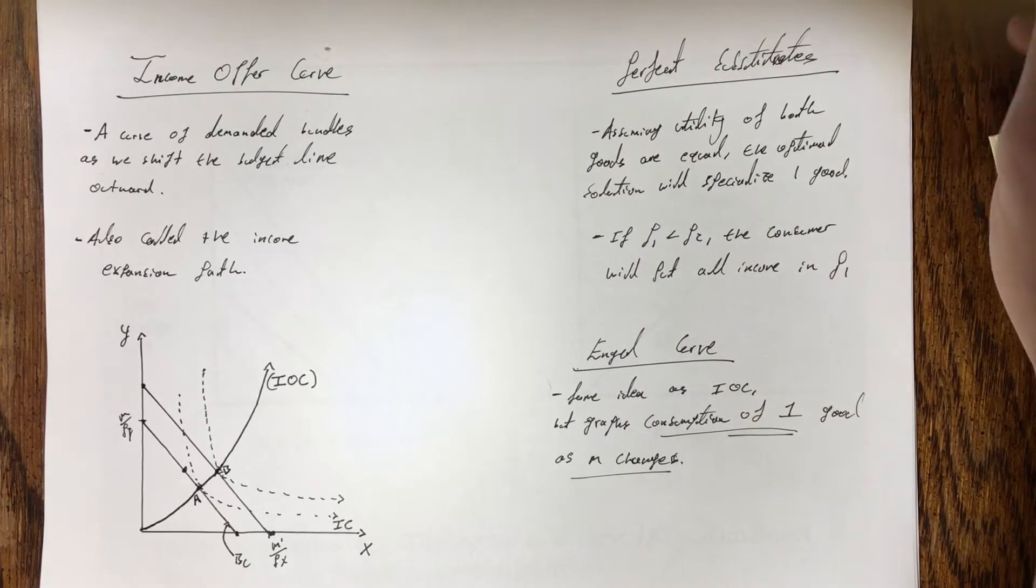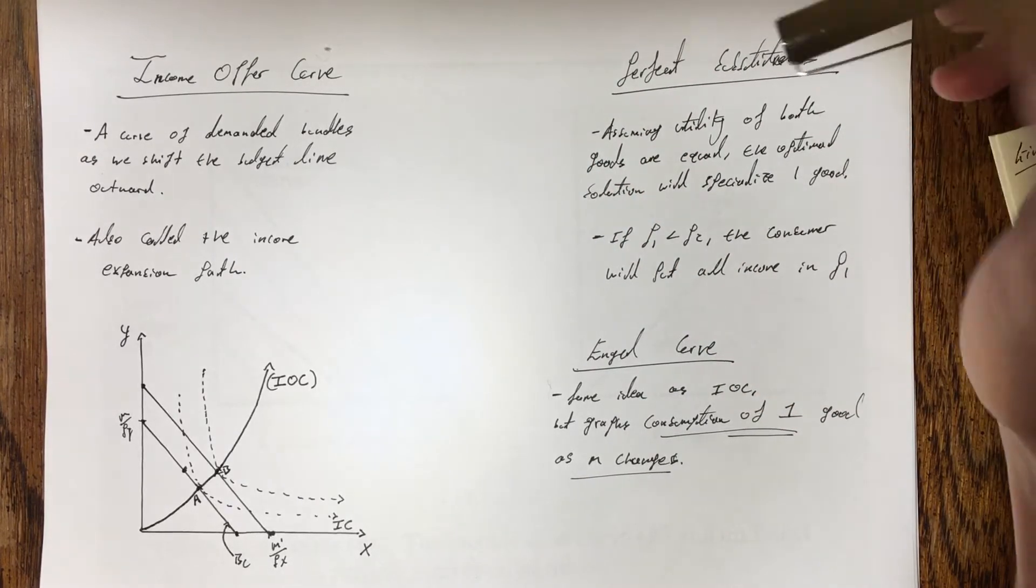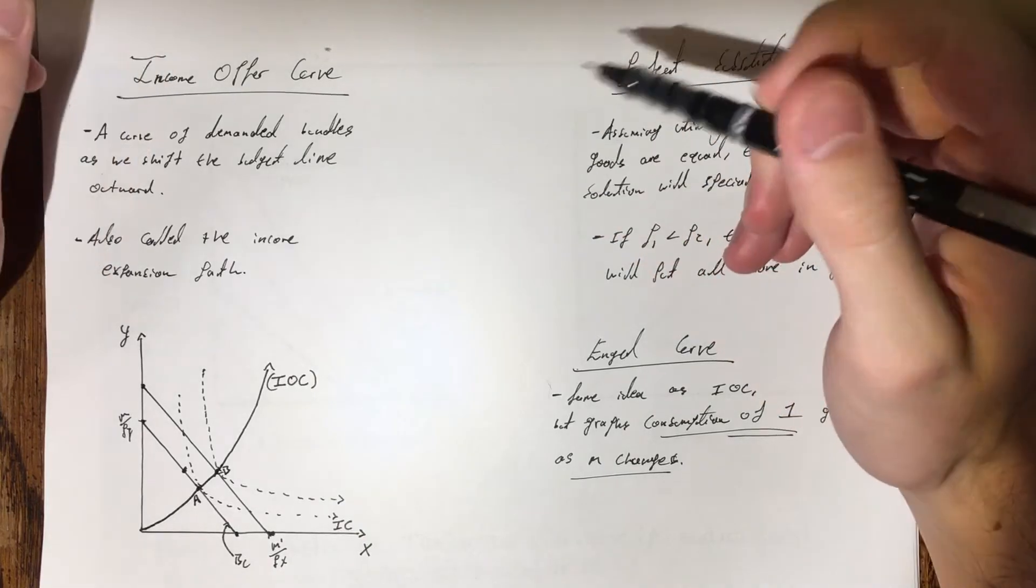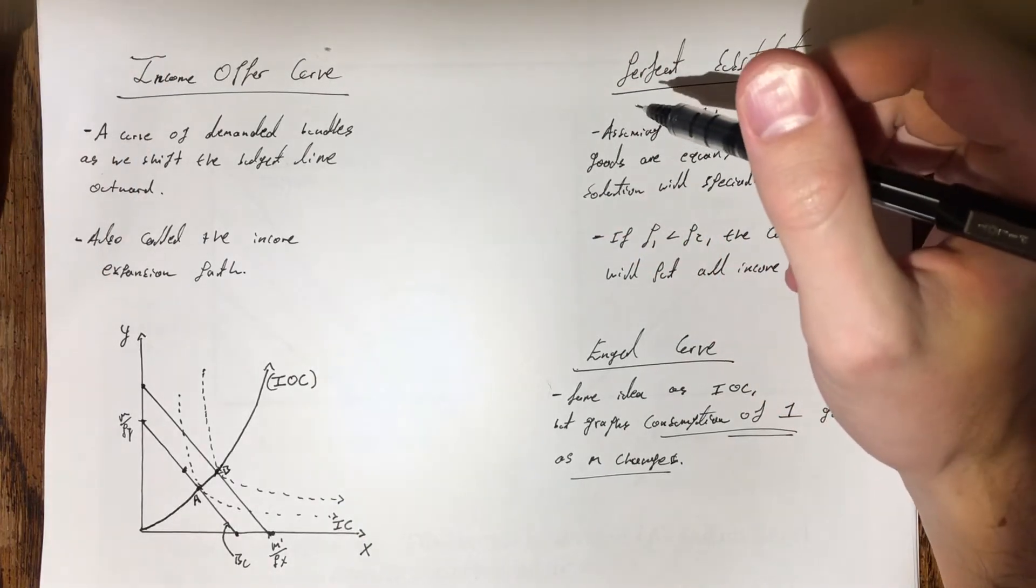This is an overview of the income offer and Engel curves on page 99 of the Varian textbook for perfect substitutes.